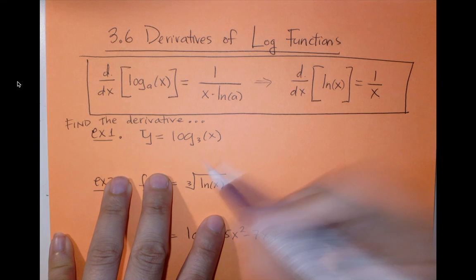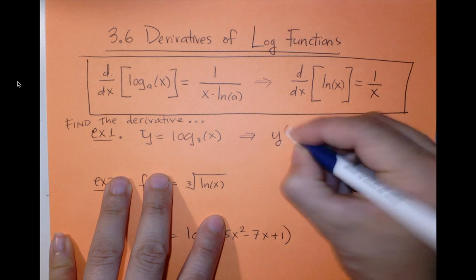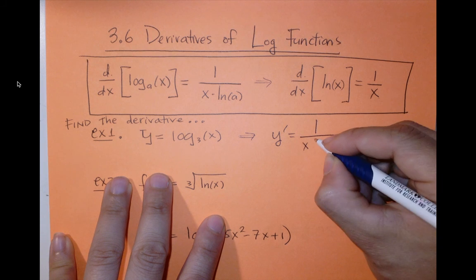So find the derivative. This just follows directly from the formula. Y prime is equal to 1 over x times ln of 3.